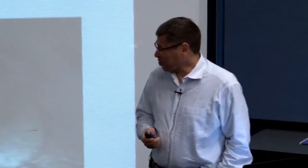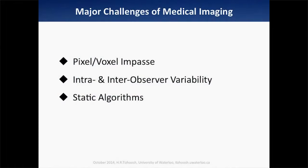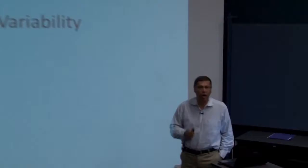These are problems that, in my understanding, are preventing medical imaging from making any breakthrough. The three main problems of medical imaging are pixel, voxel, and impasse. As long as we are working with pixels — generating pixels, capturing pixels — nothing big will happen. We have to come up with something else: a completely different generation of sensors and imaging devices that do not capture pixels or voxels.